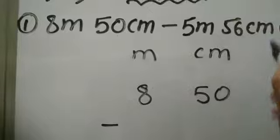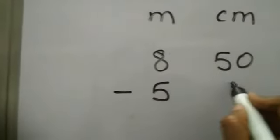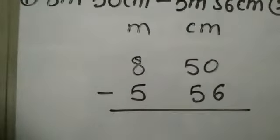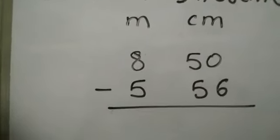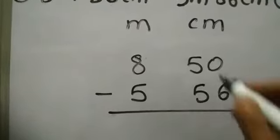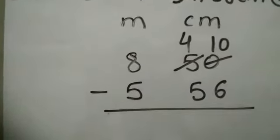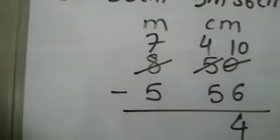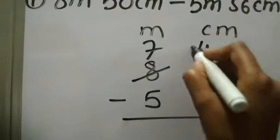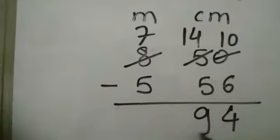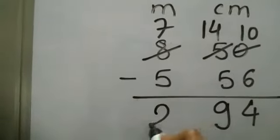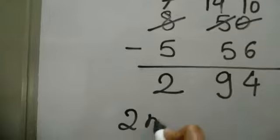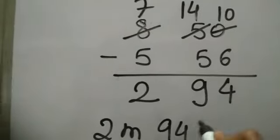Minus 5 meter 56 centimeter — 5 meter 56 centimeter. Now let us subtract. 0 minus 6 is not possible as 6 is greater than 0, so we take borrow from 5. So it is 4 and it will be 10. Now 10 minus 6 is 4. 4 minus 5 is again not possible, so we take borrow from 8. So 7 will be left over there and this will be 14. 14 minus 5 is 9, and 7 minus 5 is 2. Hence the final answer is 2 meter 94 centimeter.